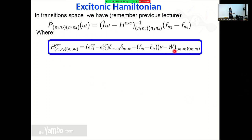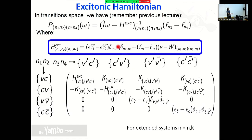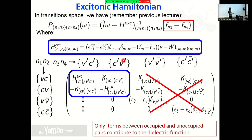The form of the Hamiltonian contains quasi-particle corrected energies, the electron exchange, the screened electron interaction, and occupation factors weighting the kernel. If you vary N1 and N2 over valence, conduction, conduction, valence indices, you get a matrix structure. We are interested in excitons between valence and conduction transitions — this block — and we can forget about the rest, since one block is zero due to occupation factors. You can show that this part is independent and focus on the valence-to-conduction space.